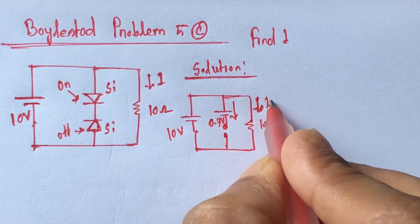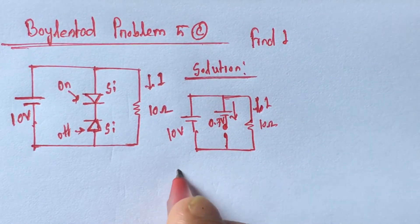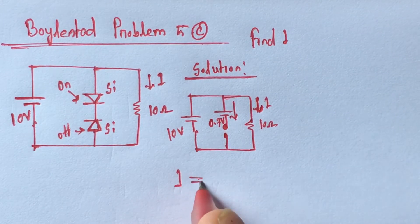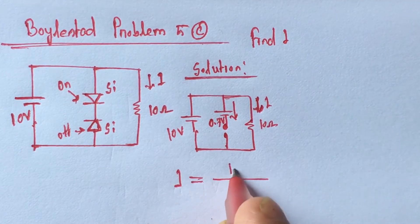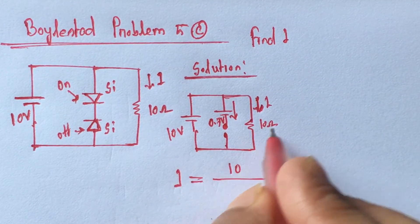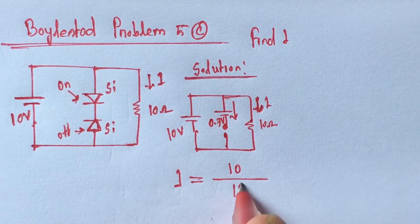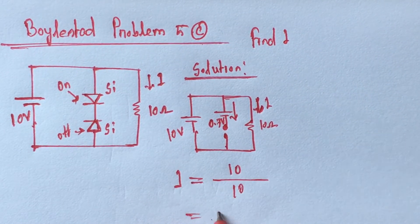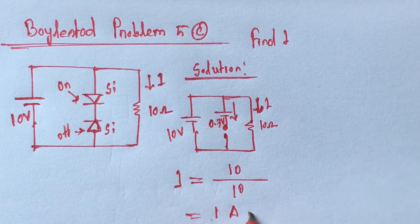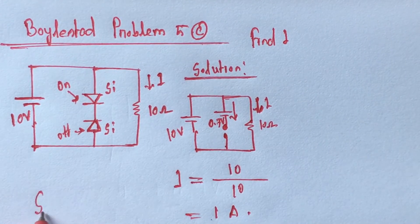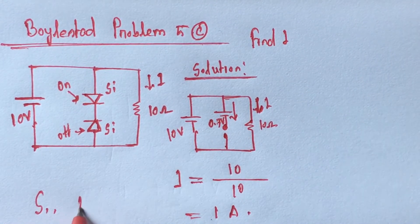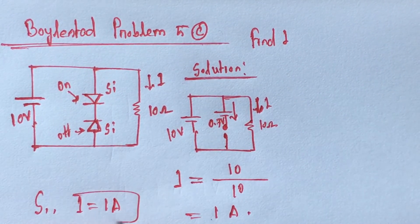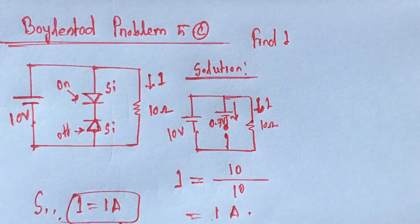So we can easily determine the current I, which will be equal to the voltage 10 divided by the resistance — that is 1 ampere. So I is equal to 1 ampere. This is the answer.